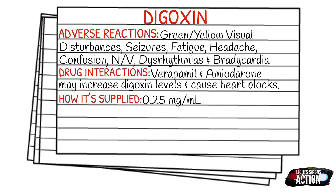Some of the adverse reactions you could see with digoxin are green and yellow halos or visual disturbances, seizures, fatigue, headache, confusion, nausea and vomiting, dysrhythmias, and bradycardia.